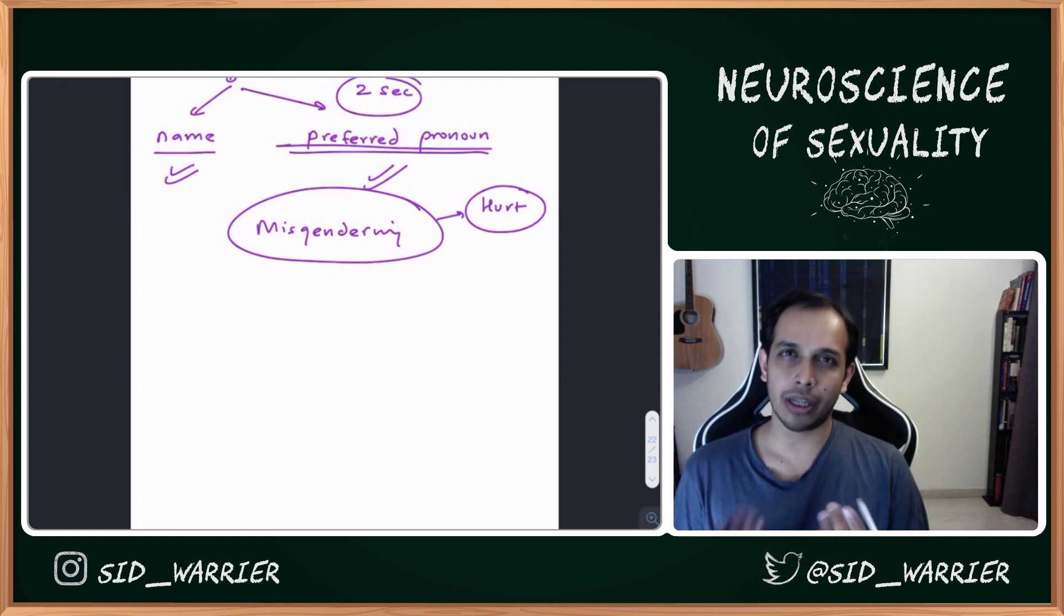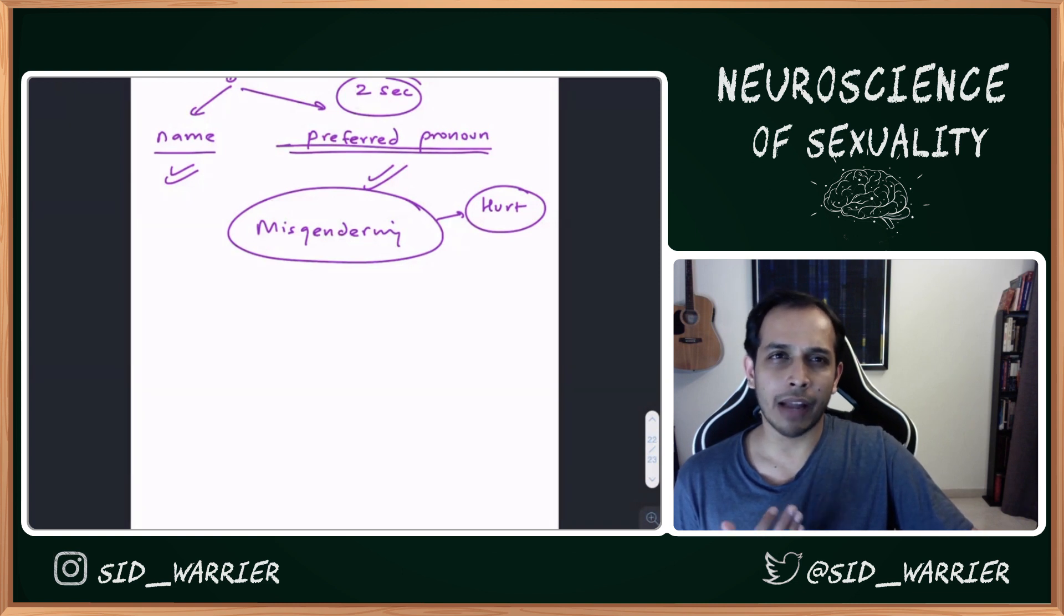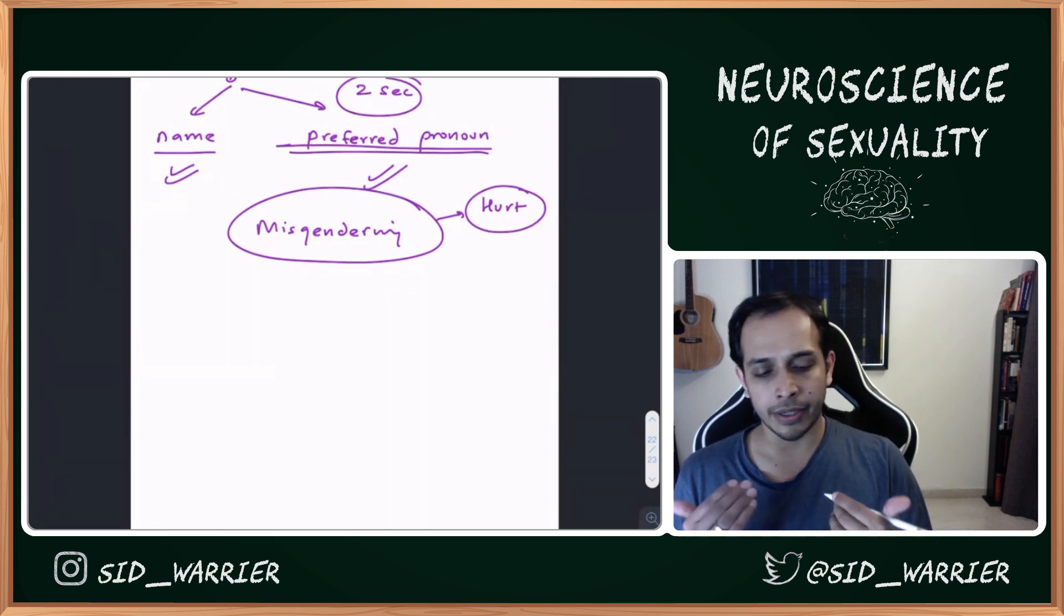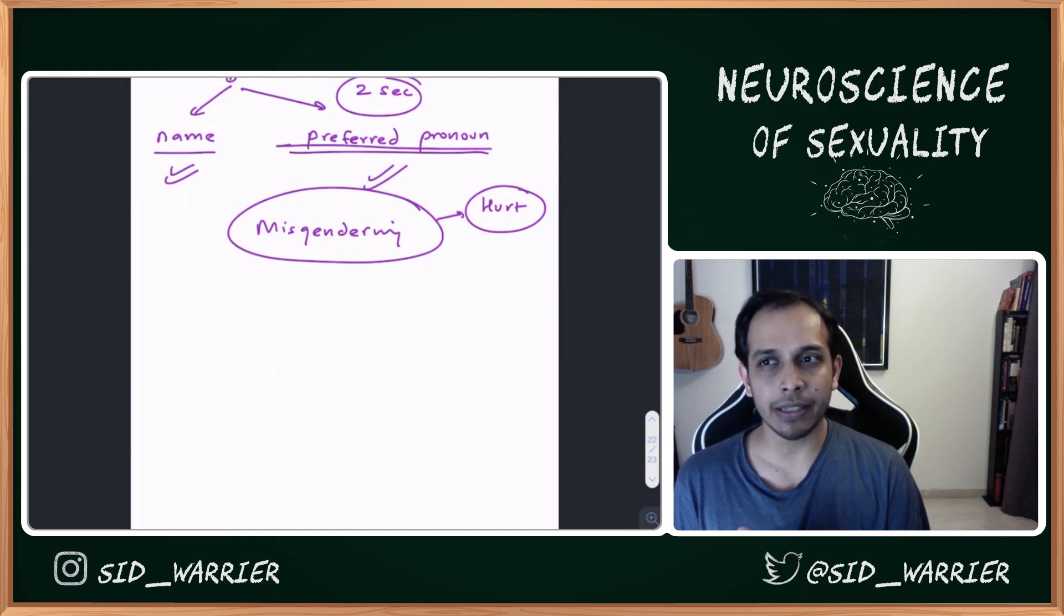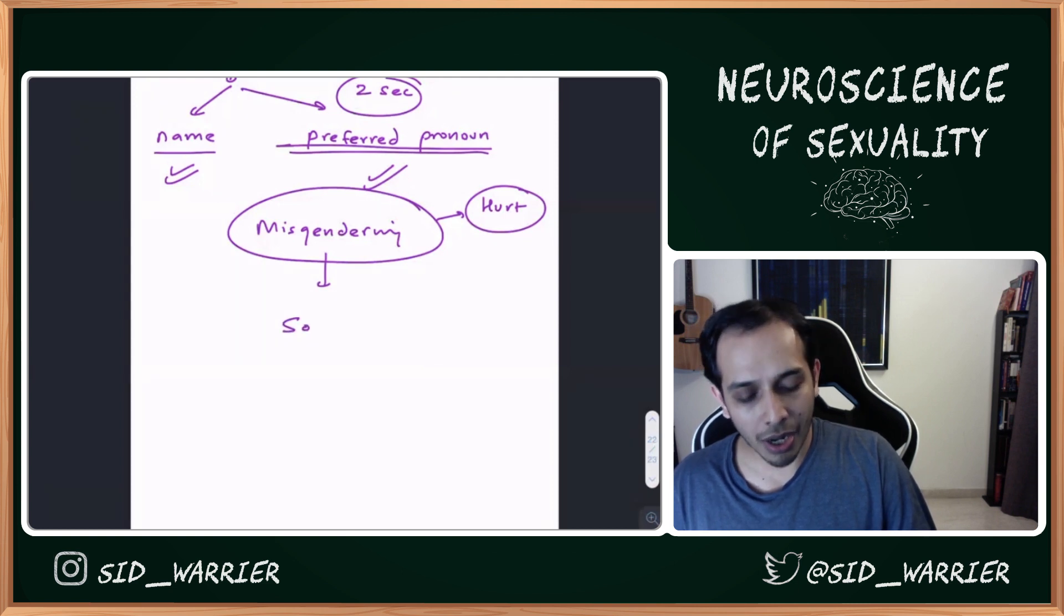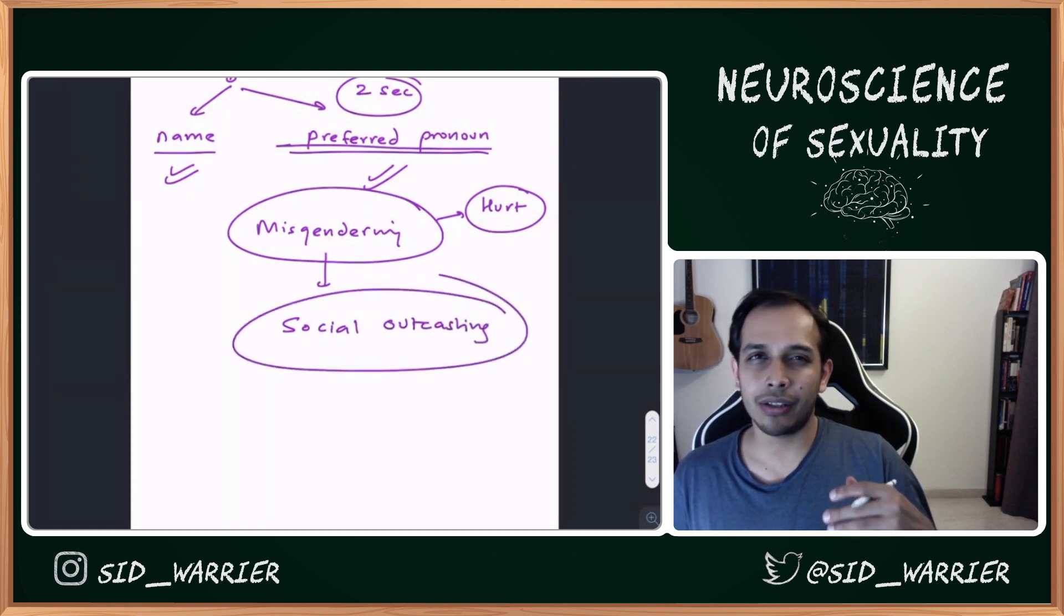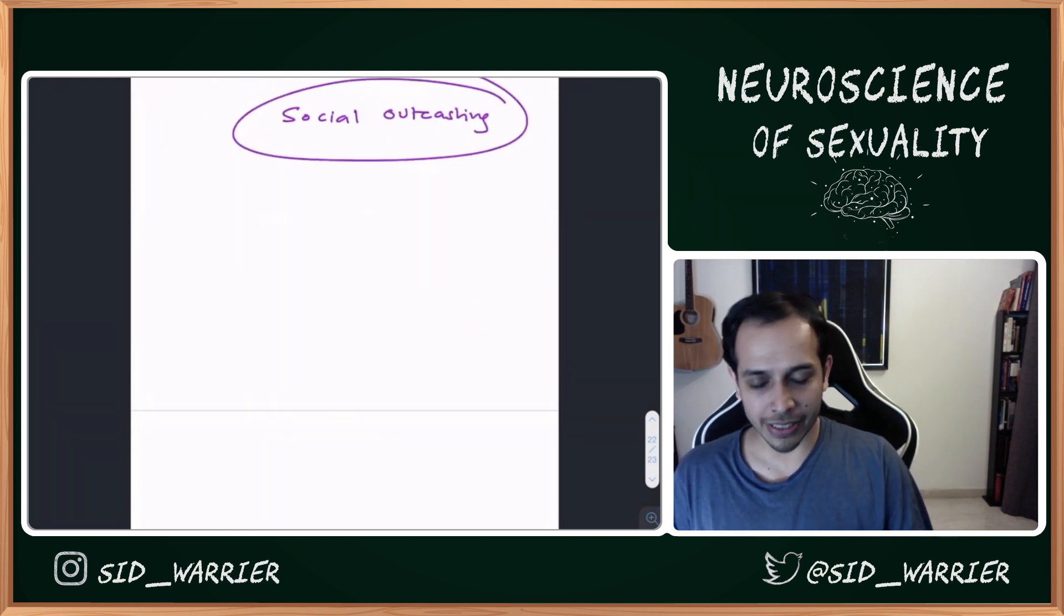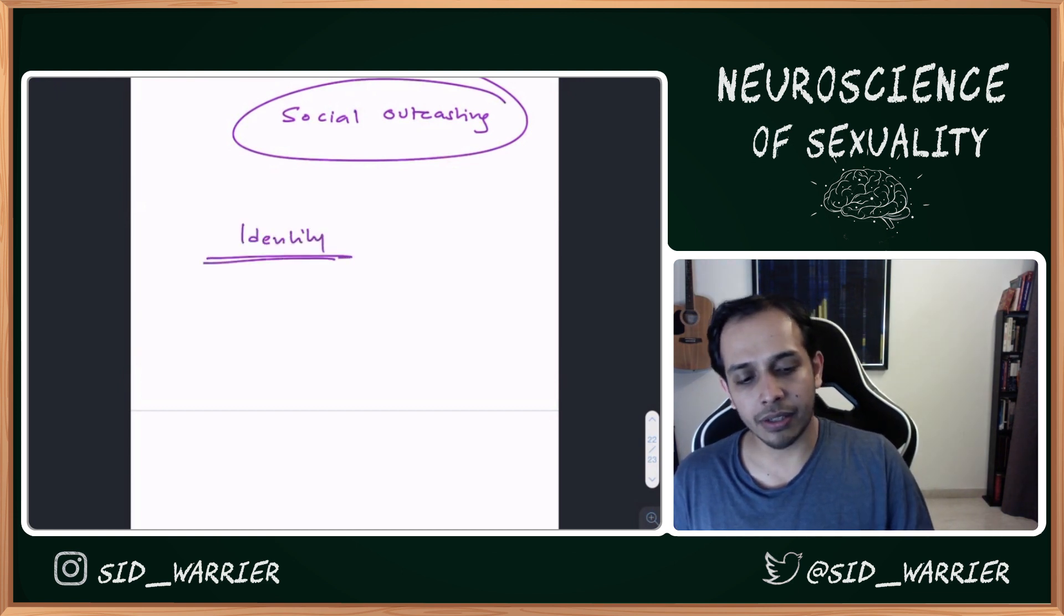I haven't seen this conversation happening much in India especially, but I think it's going there and it's good to know. Empathy is very important because what you're doing is questioning someone's identity. To the brain, when someone questions your identity, it's like social outcasting. You don't want to socially outcast anyone because that's not what we want to encourage in ourselves as a society.